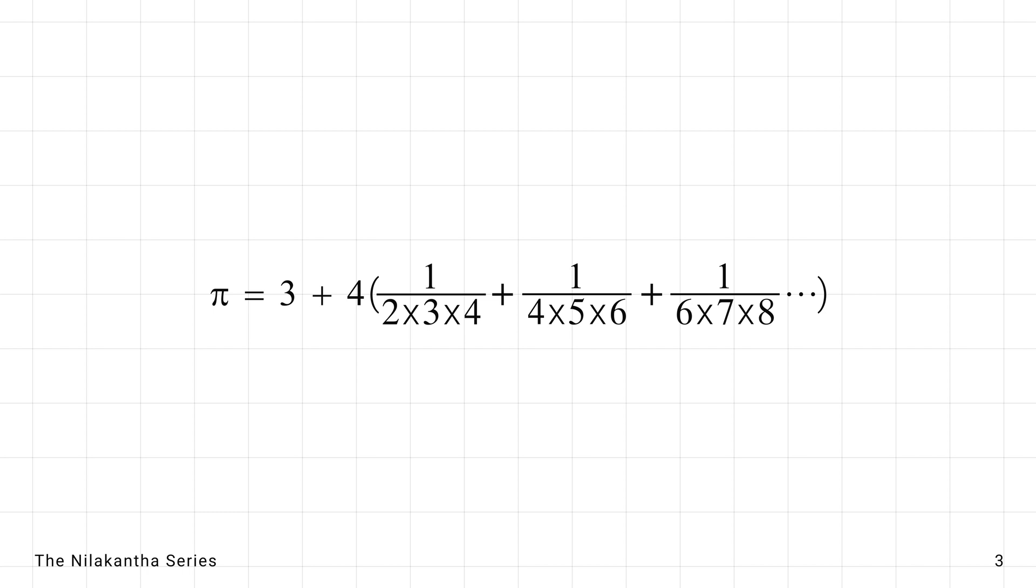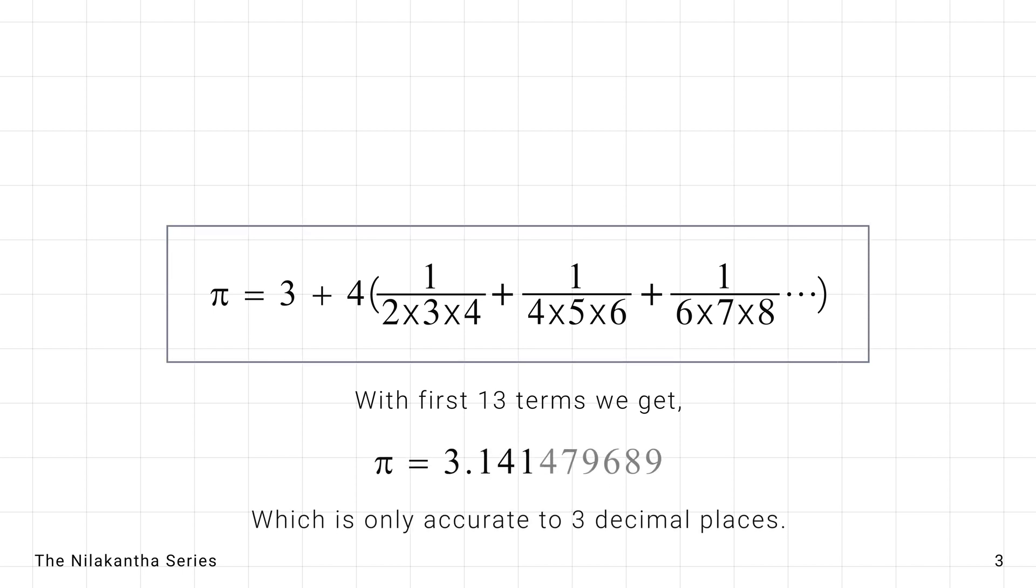Starting with 3, this series adds and subtracts fractions from a sequence based on consecutive even numbers. Its faster convergence compared to Leibniz series makes it a more efficient tool for approximating pi.